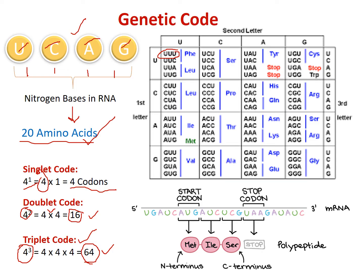On the right side you can see the genetic code table. You can draw this table by placing four nucleotides on the left side, top, and right side. For example, taking U from the left, U from the top, and U from the right gives UUU. Taking U, U, and C gives UUC. There are 64 codons total, each having three letters.